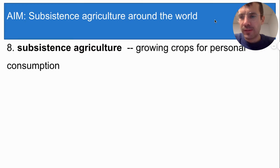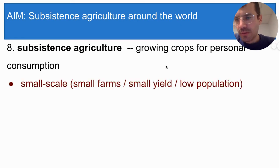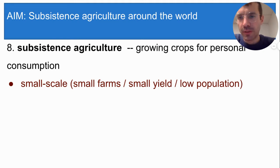In the last lesson you learned the term subsistence agriculture, and I want to tell you a little more about that term now. Subsistence agriculture is small scale, which means that farmers have relatively small farms or small herds of livestock, and they don't produce a large amount of food, which means that they support relatively small populations.